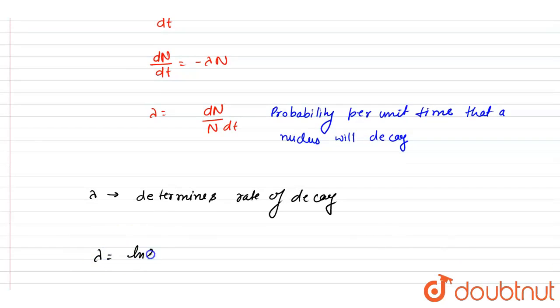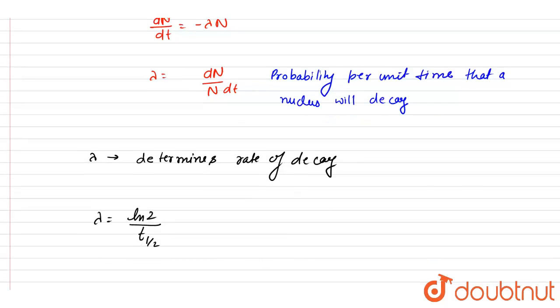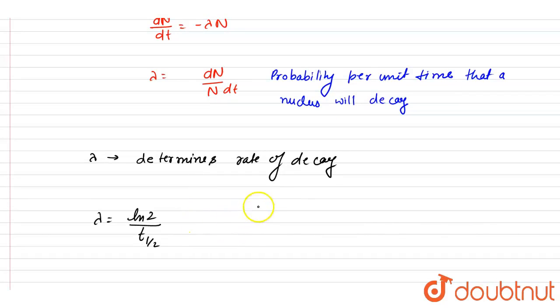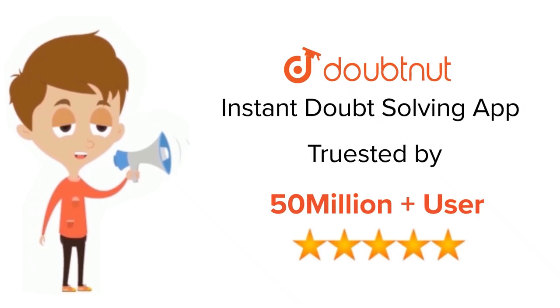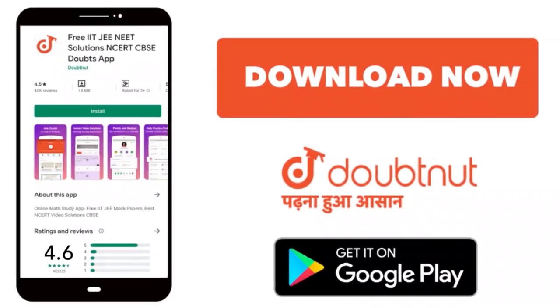Where half-life is the time in which the nuclei become half. So this t half is the half-life. Simple. Thank you. For class 6 to 12th, IIT, and NEET level, trusted by more than 5 crore students, download Doubtnut app today.